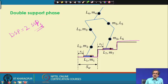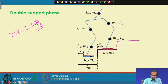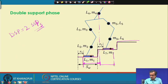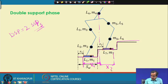The trunk mass M4 has significant influence on balance. We take the projection of the trunk mass on the ground and find the distance from this projected point to the edge of each leg. This distance is denoted by capital X1 on one side and capital X2 on the other side.